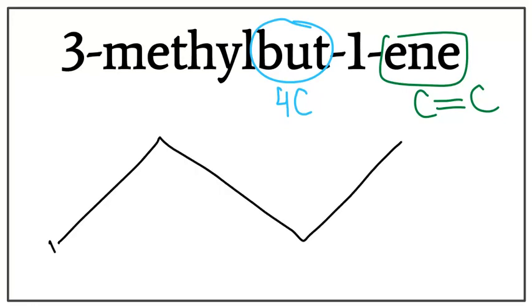Let's number them. One, two, three, four. This one here tells us the location of the double bond present in the chain, which is between carbon one and carbon two.